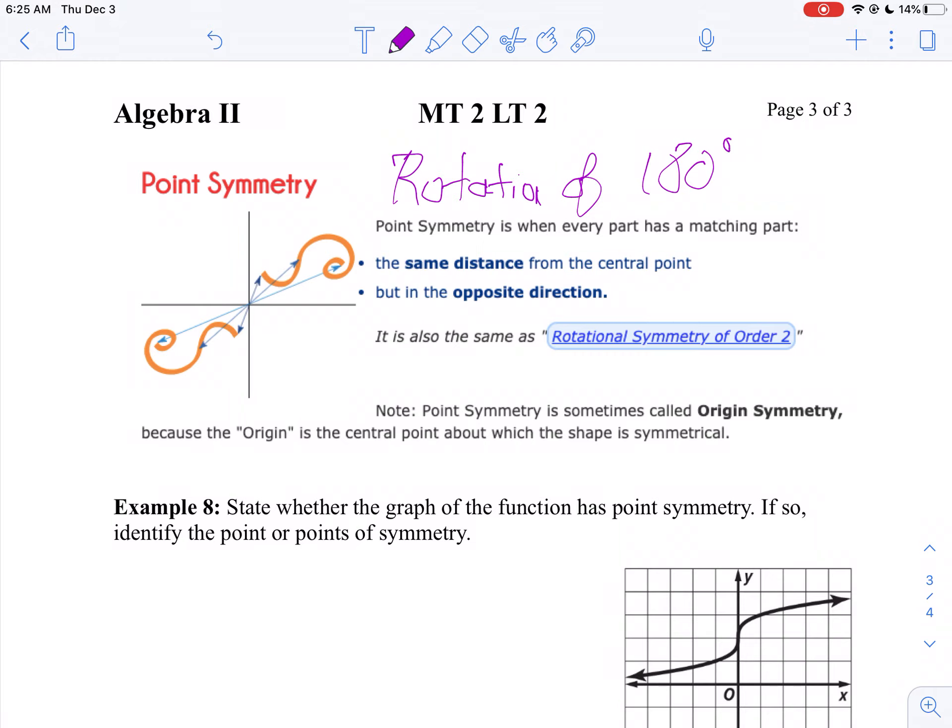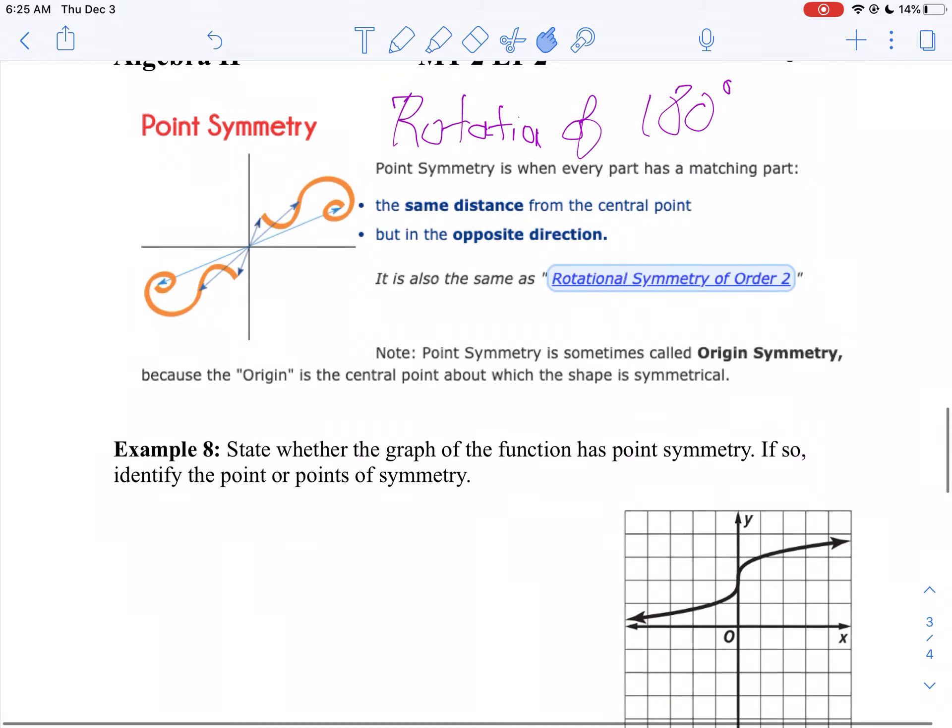And it doesn't have to be through the origin. It can be through any point. So if I take a look at example eight, is there a point on the graph where I could turn the graph through that point and it would match up perfectly?